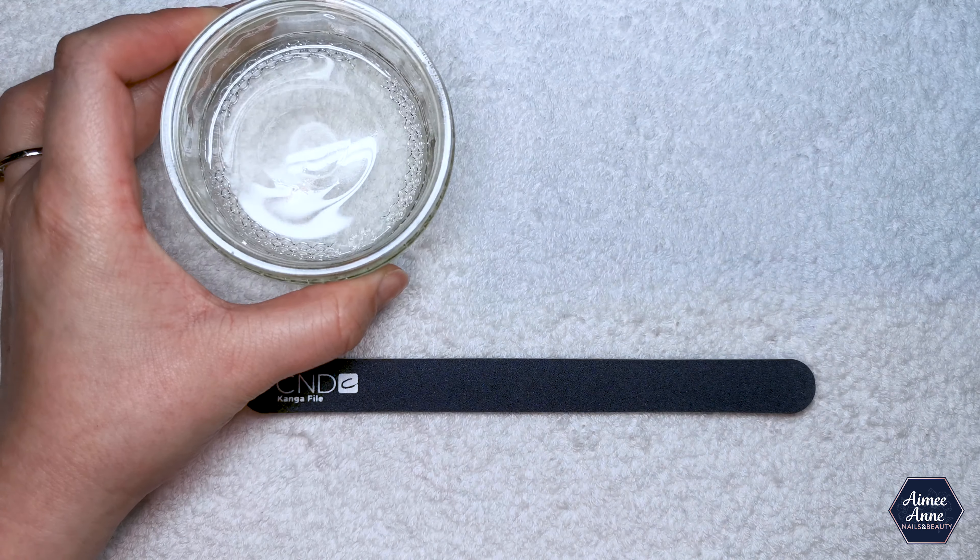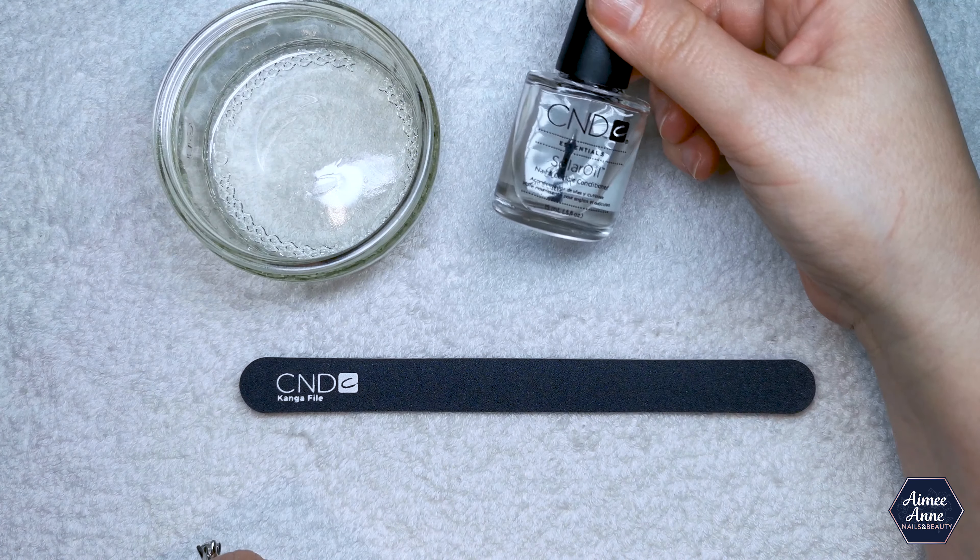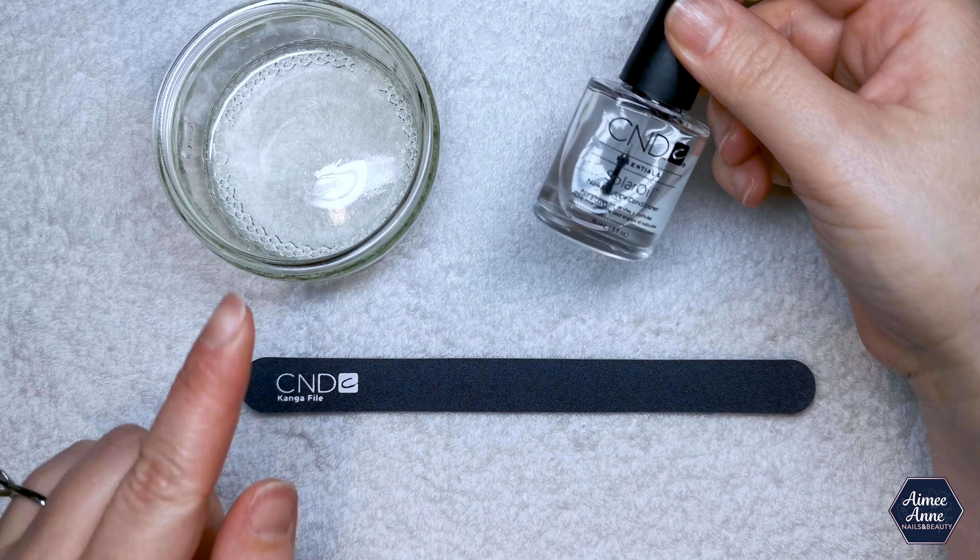Then I have decanted a small amount of my CND solar oil into a glass dish here, just so I can soak my nails in. You can use whichever you want, but make sure you can get your fingers in. And you need something to push your cuticles back. Here's a wooden stick that you can get from most supermarkets in the nail area, and it will be nice and gentle for you.